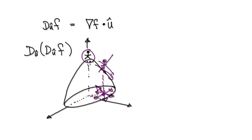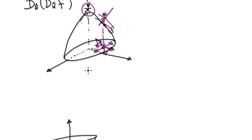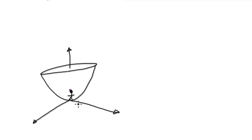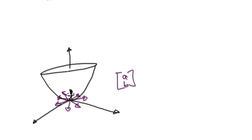In this case, the concavity is always negative. If you're at the bottom of a valley, the unit vector A and B could be anything. No matter which direction you head in, the concavity is always going to be positive — meaning it always concaves up.